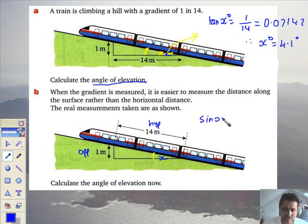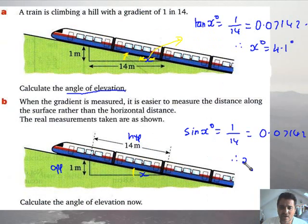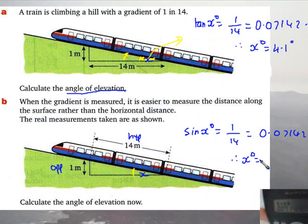And that means we're playing with sine because op and hype is sine. So no longer tangent, but the sine of mystery angle of elevation is going to be the opposite side, 1 over 14, which is going to be still 0.0714, 1, 4, 2, etc. But this time we're going to go shift sine and not shift tan. So let's just whack in the 1 divided by 14 again. Yep, same answer. Of course it is. Now we're going to go shift sine. And bam, what have we got?